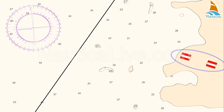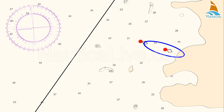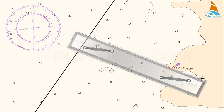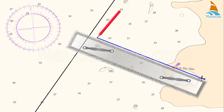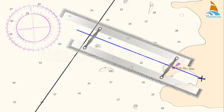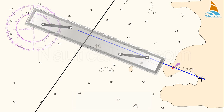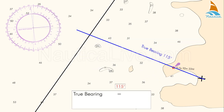The two objects can be two beacons, two buoys, a building and a lighthouse, or other objects. With your parallel ruler, determine the true bearing of the transit and make a note of it. In this case, the true bearing is 115 degrees.